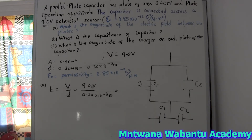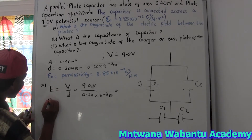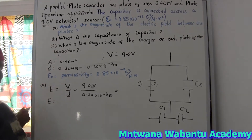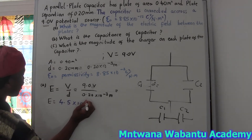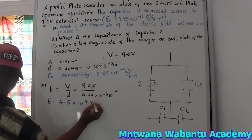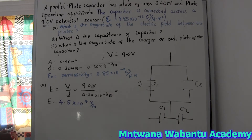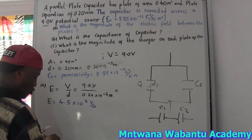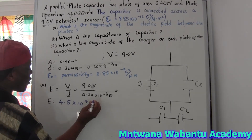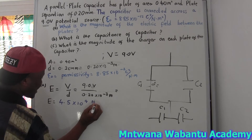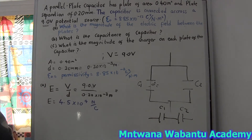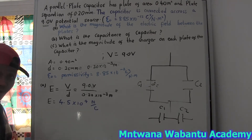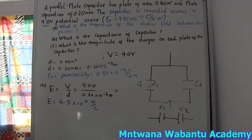Plugging into the calculator, this gives us 4.5 times 10 to the power 4 volts per meter. The unit is volts per meter, or you can also say newtons per coulomb — both are valid units for electric field.